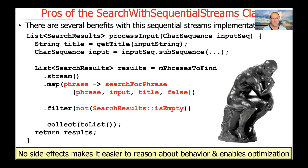This allows us to reason about our program, and also analyze it using tools like static or dynamic checkers. Stateless behaviors are much easier to think about because you don't have to worry about what the state is. They also support transparent optimization, because you can turn it into a parallel stream with little or no effort.